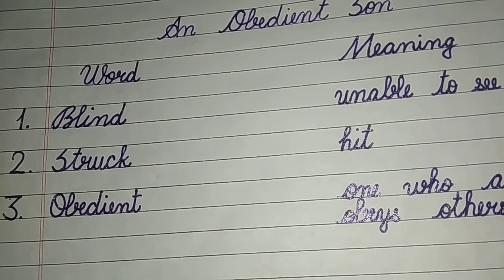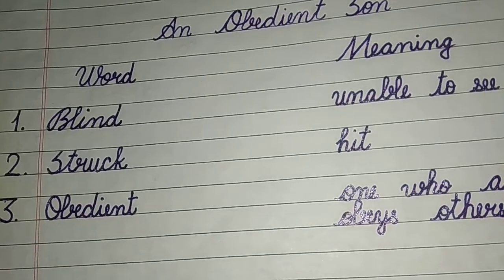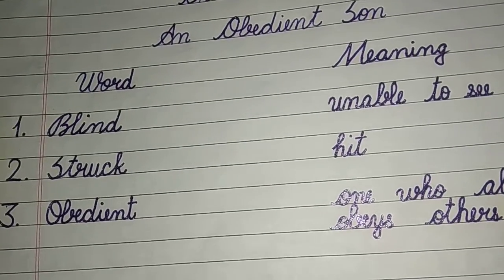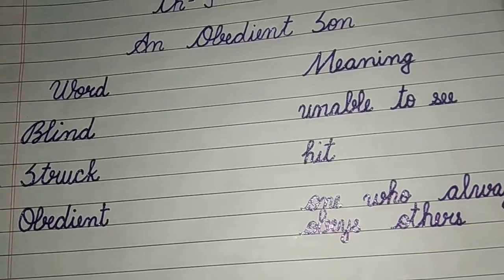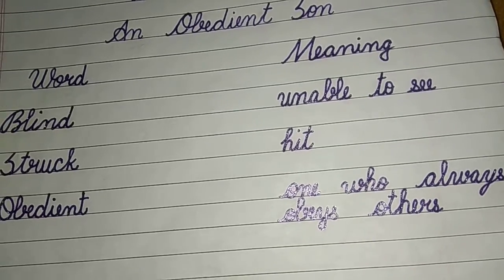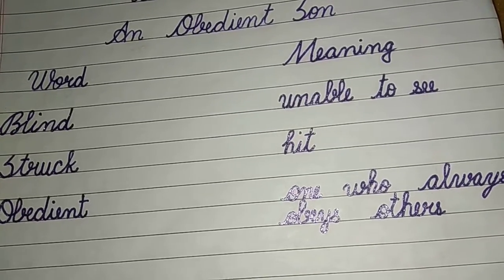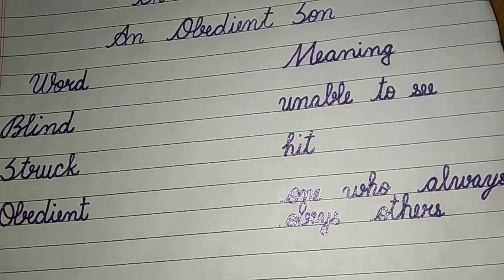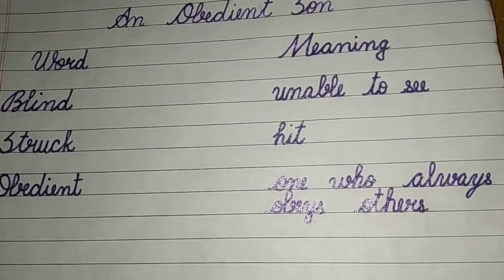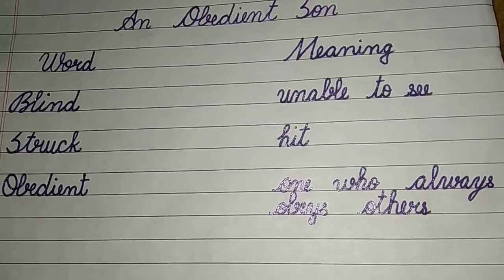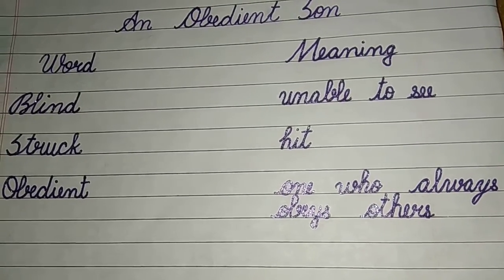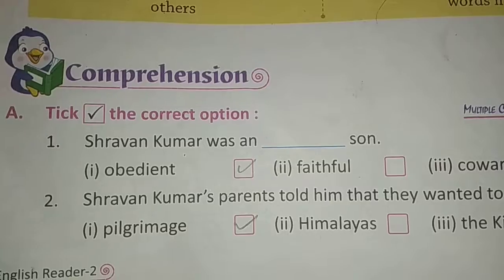Next is 'Obedient' — Aagekari. Meaning is: one who always obeys others.